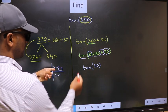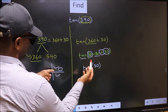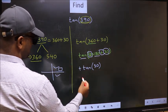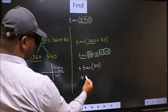So we should put plus. So plus tan 30 is 1 by root 3. This is our answer.